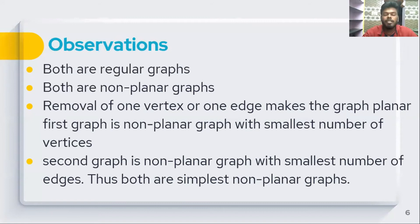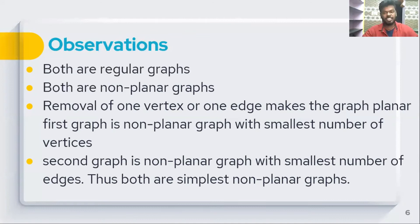K5 has 5 vertices and 10 edges. K3,3 has 6 vertices and 9 edges. So K5 has fewer vertices and K3,3 has fewer edges among these non-planar graphs.